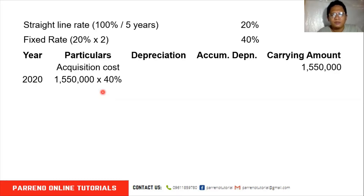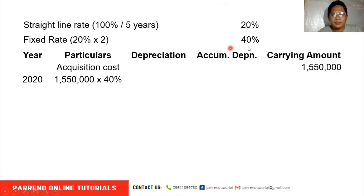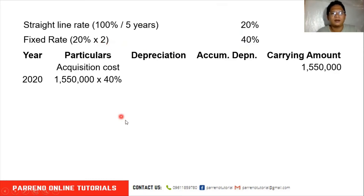To get the most out of this problem, note that the same concept is used in the 150% declining balance method. So this double declining is 200% (times two), and the same concept applies to the 150% declining balance as well.